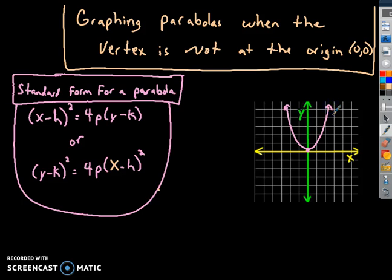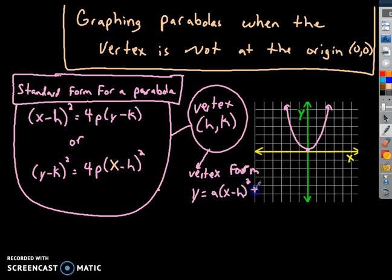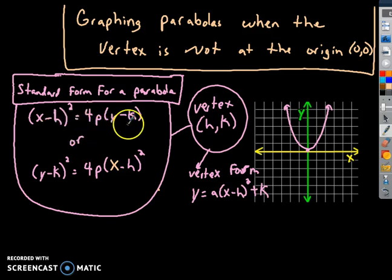In this video we have new formulas for standard form of a parabola. These new formulas actually trump the previous ones because they account for any coordinate for the vertex — the vertex is coordinate (h, k). This is directly related to the previous understanding: the vertex form is y = a(x − h)² + k.